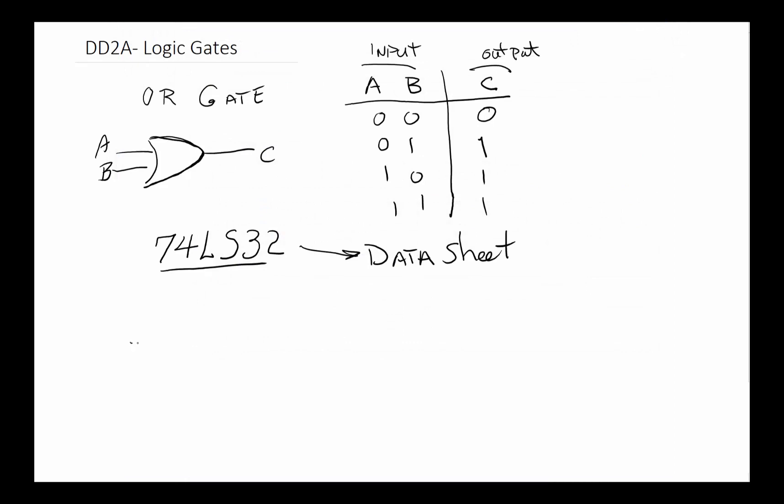The next gate we should look at, which is very common, is an AND gate. An AND gate, you got an A and a B coming in and a C. That's a symbol for an AND gate. The AND, as the name implies, both inputs have to be true for you to have a true output. A and B are the inputs and C is the output.